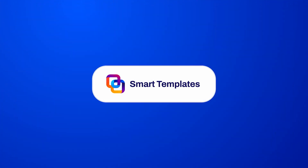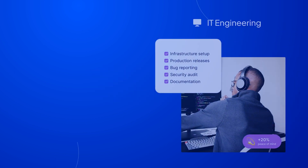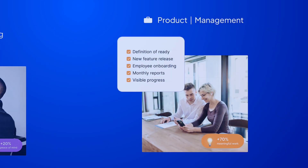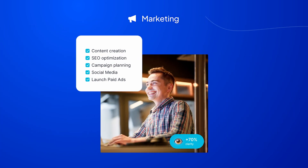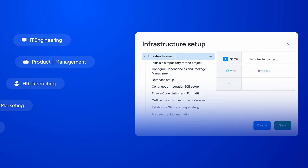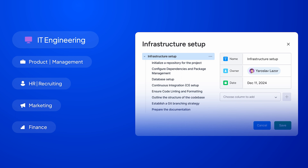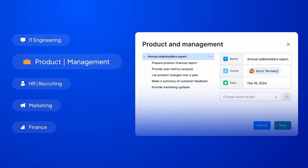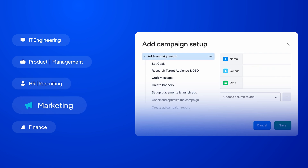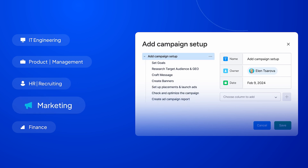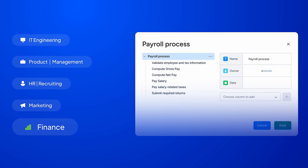As you can see, the Smart Templates app is quite useful when you want to save your team's time by streamlining repetitive processes — from SEO optimization and WordPress websites to construction. IT can use templates for tasks like infrastructure setup, managers will eliminate the hassle of repetitive reports, HR will always walk new recruits through every stage of the onboarding process, marketers will have clear guides for ads campaign setups, and the finance team will always kick off the payroll process on time thanks to Smart Templates.